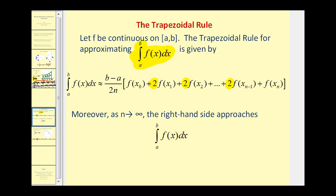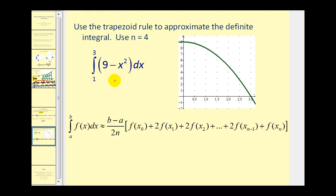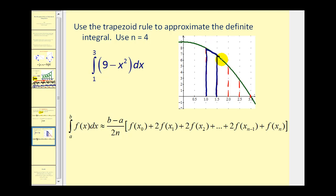Let's take a look at an example. We want to evaluate this definite integral on the interval from one to three using four trapezoids, so n is equal to four. Here's the value of a and here's the value of b. We would divide this into four equal intervals and then form our trapezoids. There's trapezoid one, trapezoid two, trapezoid three, and trapezoid four, which is actually a triangle.